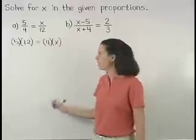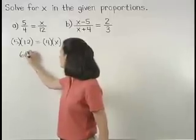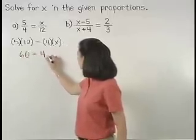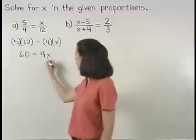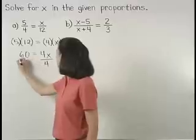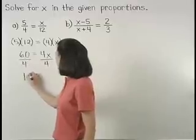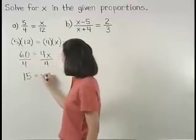So we have 5 times 12, or 60, equals 4 times x, or 4x. And dividing both sides by 4, 15 equals x.